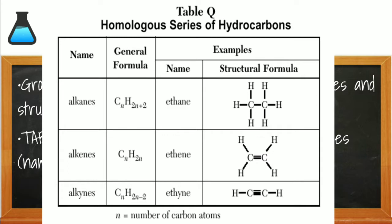We have alkanes, which have single bonds between the carbons. We have alkenes, which have at least one double bond between carbons. And we have alkynes — the Y is an I, just like Lytle — where we have at least one triple bond between the carbons. We're given a sample structure, a sample name, and a general formula for each of these families in the homologous series.